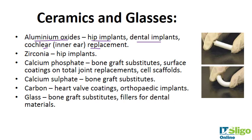Zirconia is also used in hip implants. Sometimes the femoral head would be zirconia or alumina, because it is very hard and very wear resistant. Calcium phosphates are used in bone graft substitutes, as surface coatings on total hip replacements.